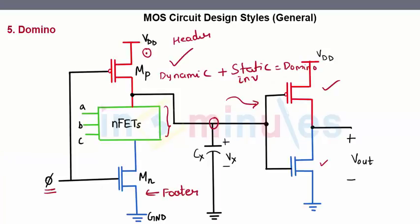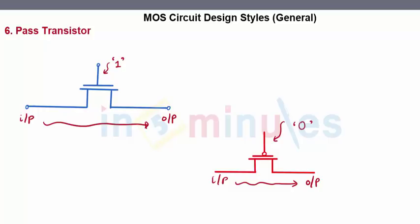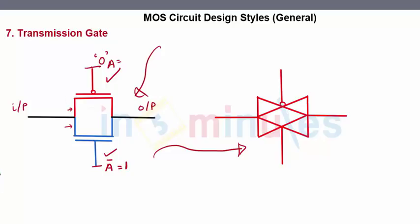Domino style is a dynamic circuit followed by a static inverter. Then we quickly went ahead and saw pass transistor, but it had its own drawbacks of producing a degraded output. So we went ahead and saw a transmission gate where a PMOS and NMOS is connected in parallel to each other.